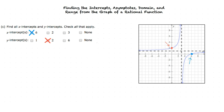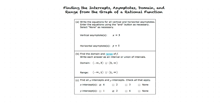Now that we've found all the solutions, let's check out the final answer to our problem. The key to these problems is using the graph given to help determine the solutions. Yes — the graph is key to determining the intercepts, asymptotes, domain, and range.